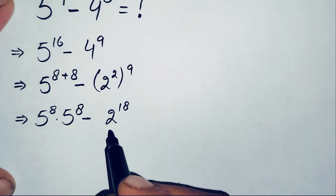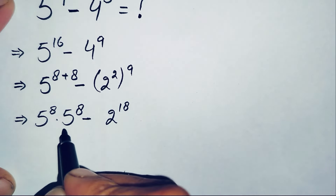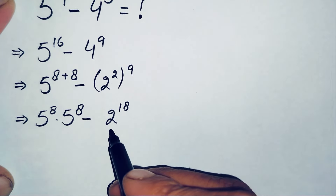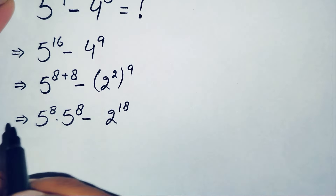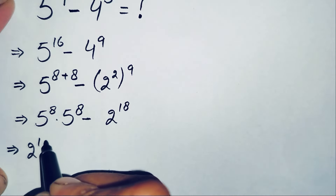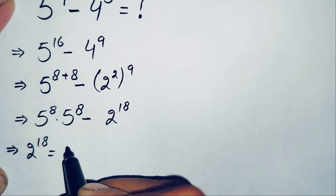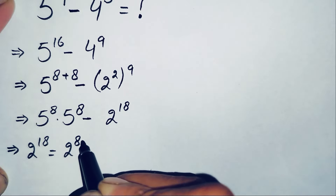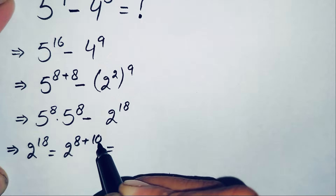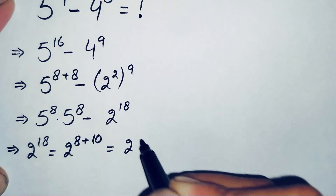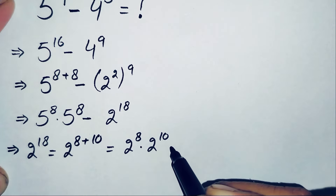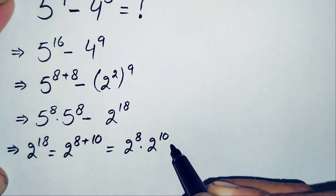Now in this step we will try to find the value of 2 raised to power 18 and the value of 5 raised to power 8. First, we find 2 raised to power 18. We can write 2 raised to power 18 as 2 raised to power 8 plus 10, and using the exponential property this becomes 2 raised to power 8 times 2 raised to power 10.